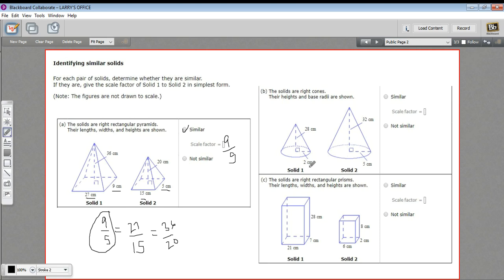We'll do the same thing here. So let's see, I think I'll pick the radius first. So two to five. That's our ratio. We'll test. And then the only other measure we have here is the height of the cone. So this would be 28 to 32.